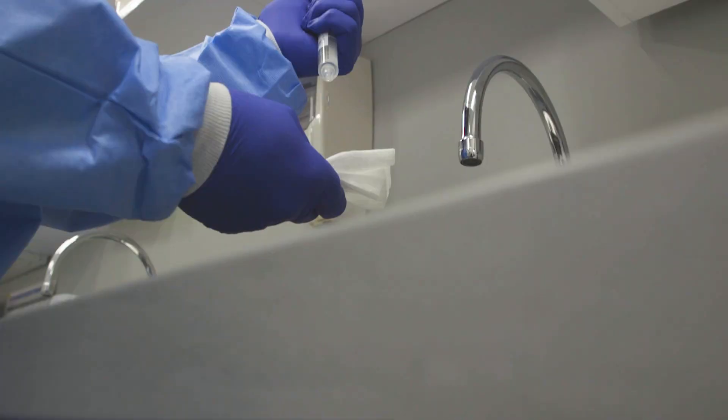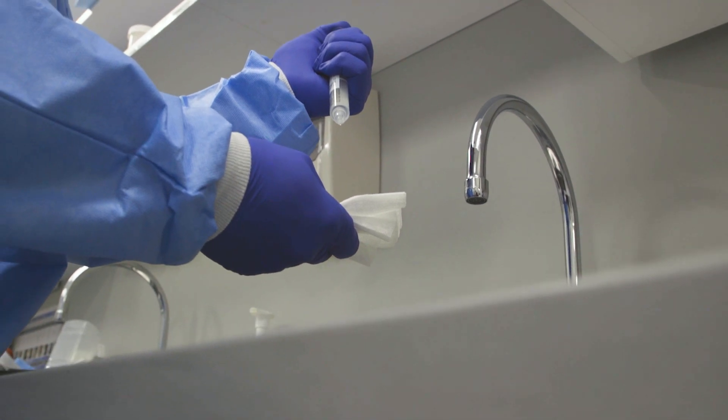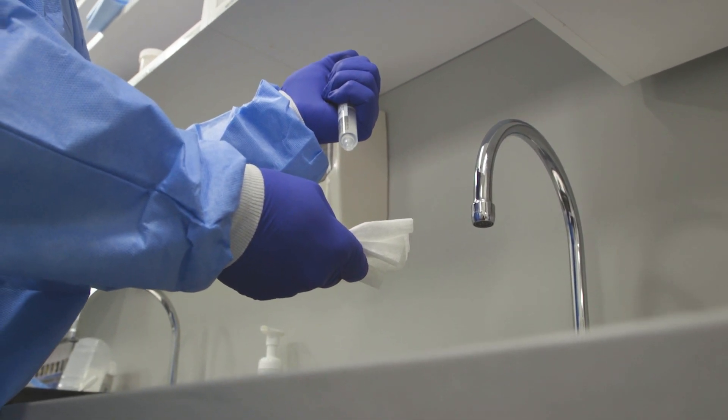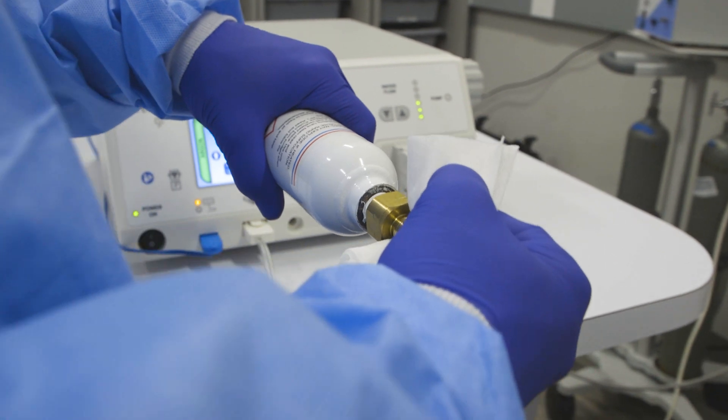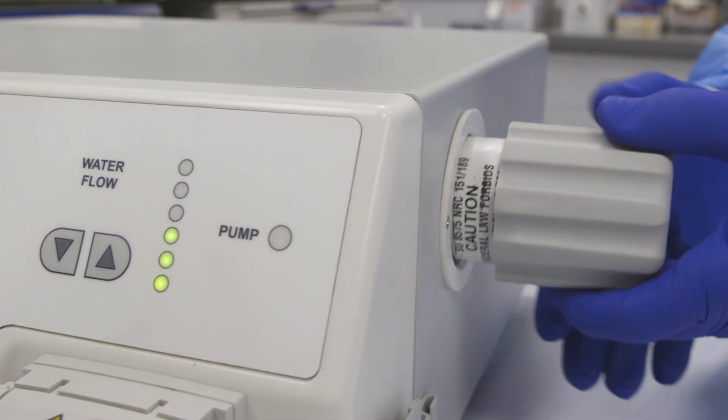If the threads are undamaged, while using gloved hands, pour a few drops of sterile water onto a clean, lint-free gauze and wipe around the brass threads, then reinstall the bottle.